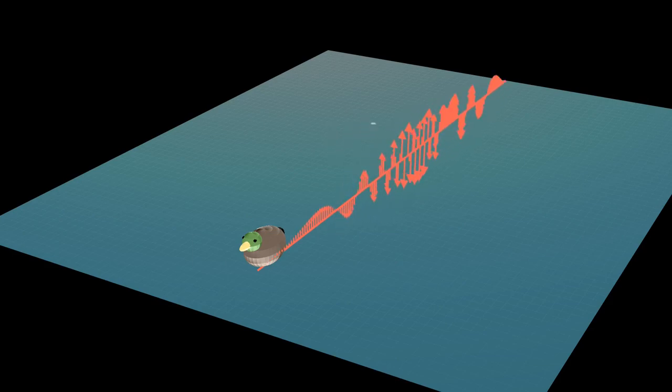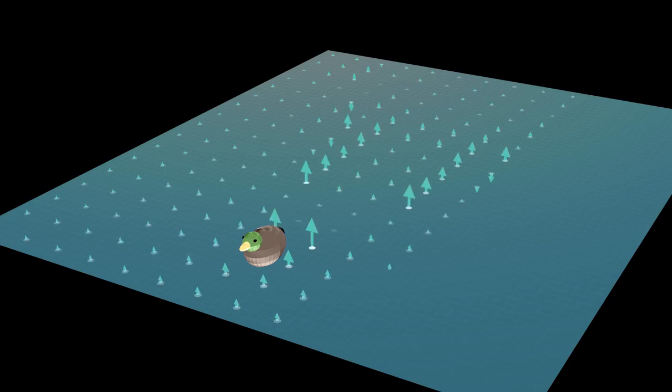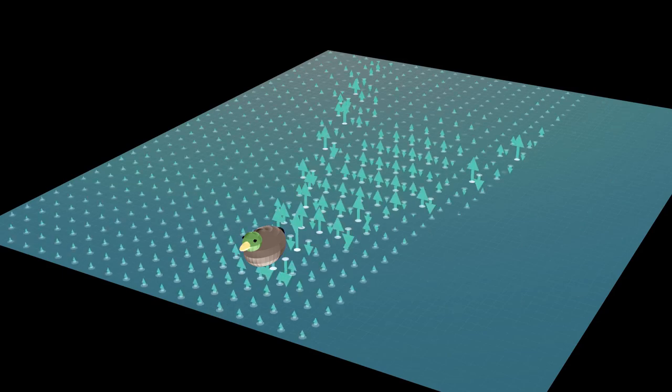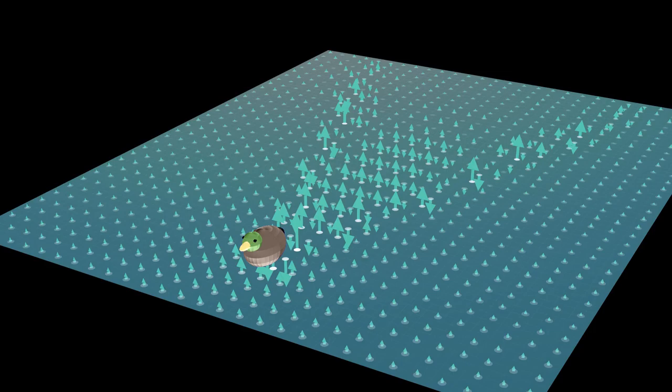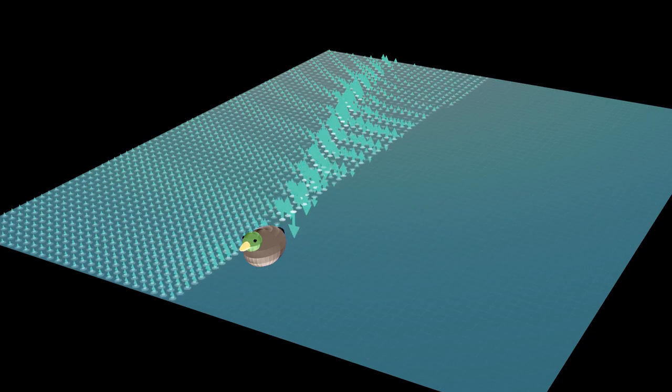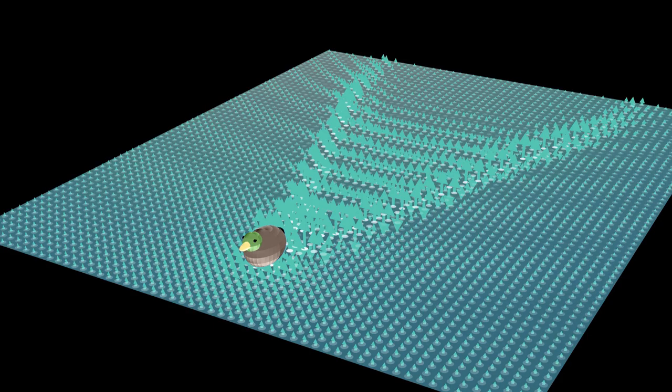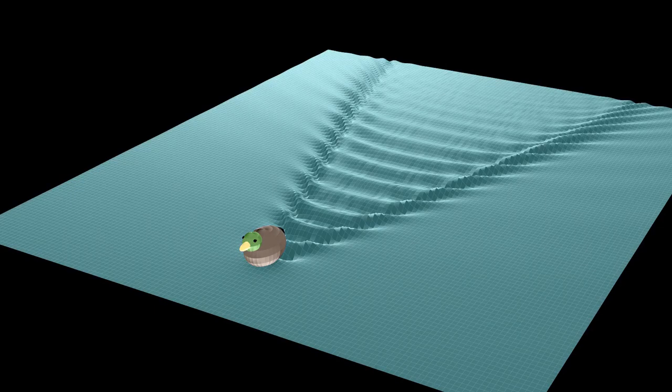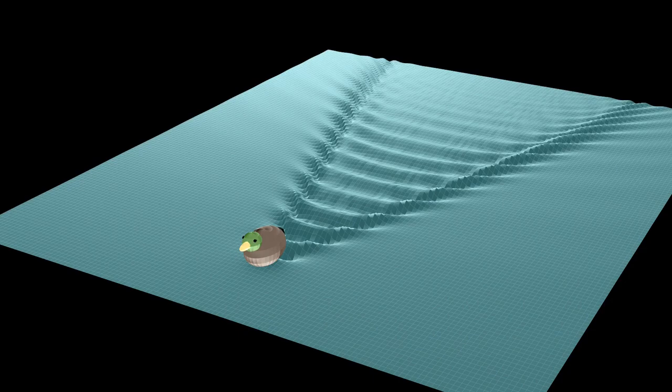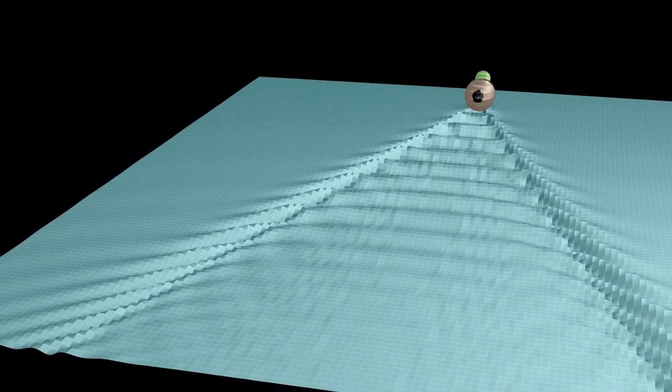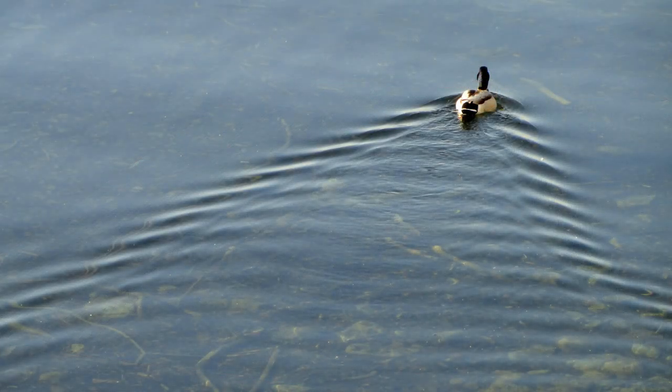To get a picture of the wake of the duck, we repeat this exercise for many points in the water. This time, we don't draw the individual contributions of points along the trajectory, only the observed wave heights. As the grid gets finer, we start to recognize the V-shaped wake. Since the arrows indicate the height of the water, we may as well do away with arrows and plot the surface of the water. And this looks very much like a real wake. But why is the wake confined to this V-shape? And why is the shape the same for a duck and for a ship?